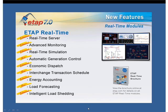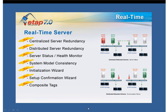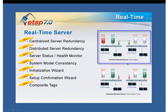First, let's start with the enhancements to the ETAP Real-Time System Architecture. ETAP Real-Time Server now allows for Central and Distributed Server Redundancy. Centralized Redundancy allows a standby server to automatically become active in case there is a failure to the primary active server.